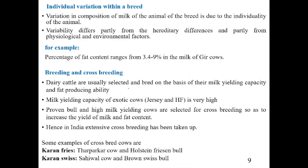Not only are there differences between breeds, but within a breed also — for example within Murrah, Sahiwal, or Gir — there is variation. This within-breed variation is due to the individuality of the animal, partly from hereditary differences and partly from physiological and environmental factors. For example, fat content ranging from 3.4% to 9% in the milk of Gir cows has been reported.